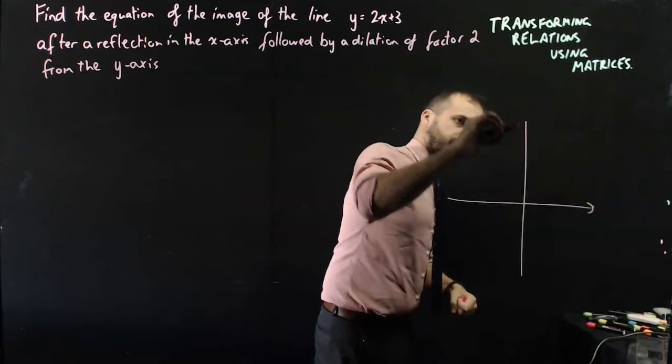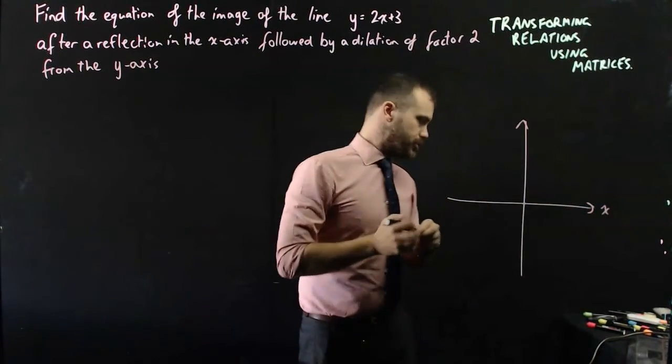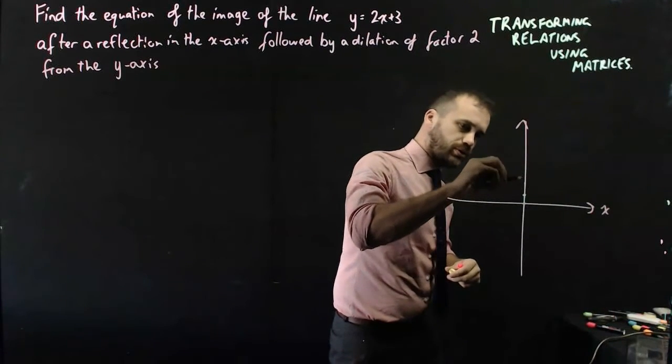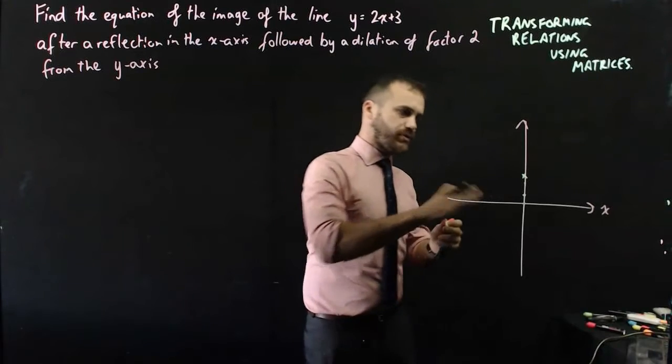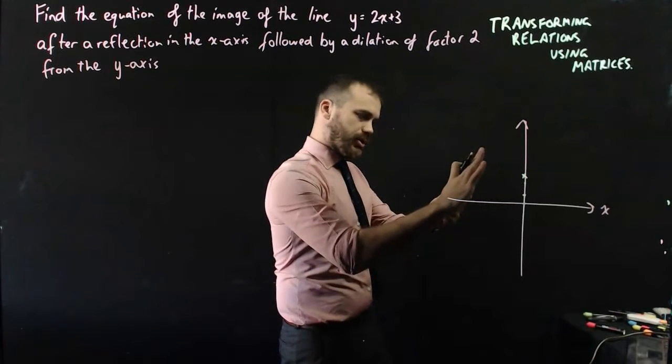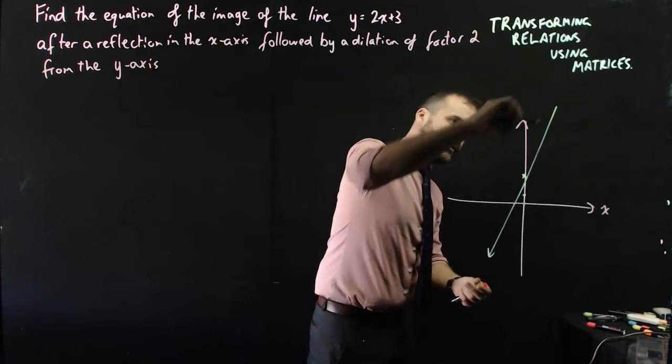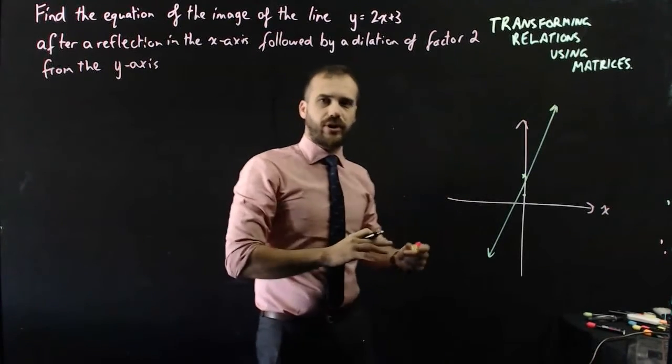This is an x and y axis. y equals 2x plus 3 looks a little something like 1, 2, 3, a y-intercept of 3 and a gradient of 2. That might be, yeah, that's probably about right.